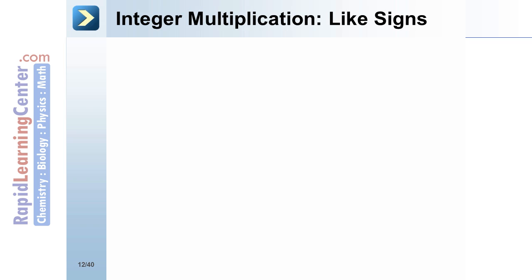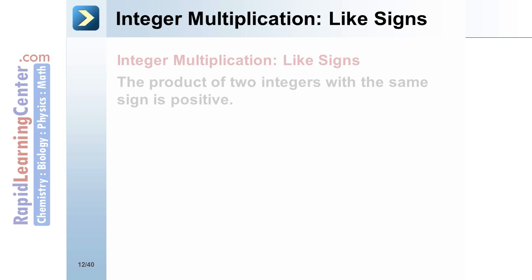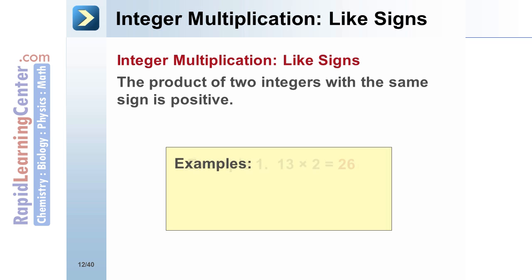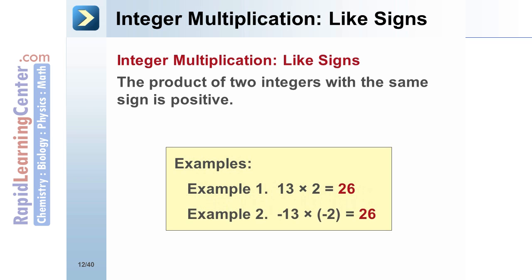Integer Multiplication — Like Signs: The product of two integers with the same sign is positive. Example 1: 13 times 2 equals 26. Example 2: Negative 13 times negative 2 equals 26.